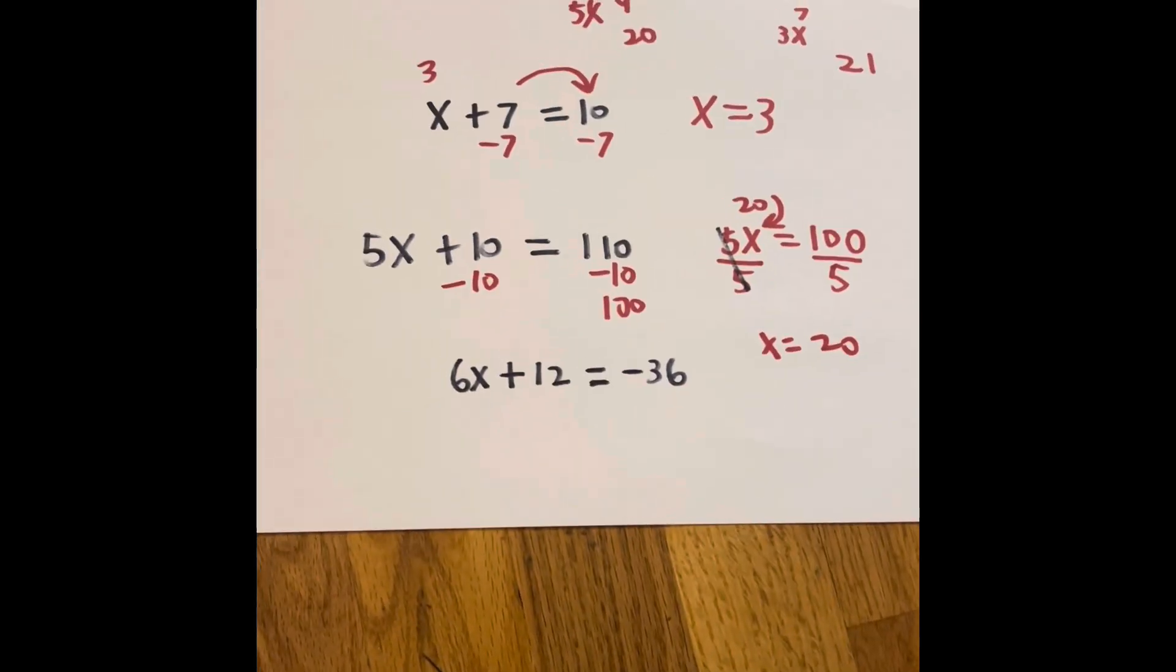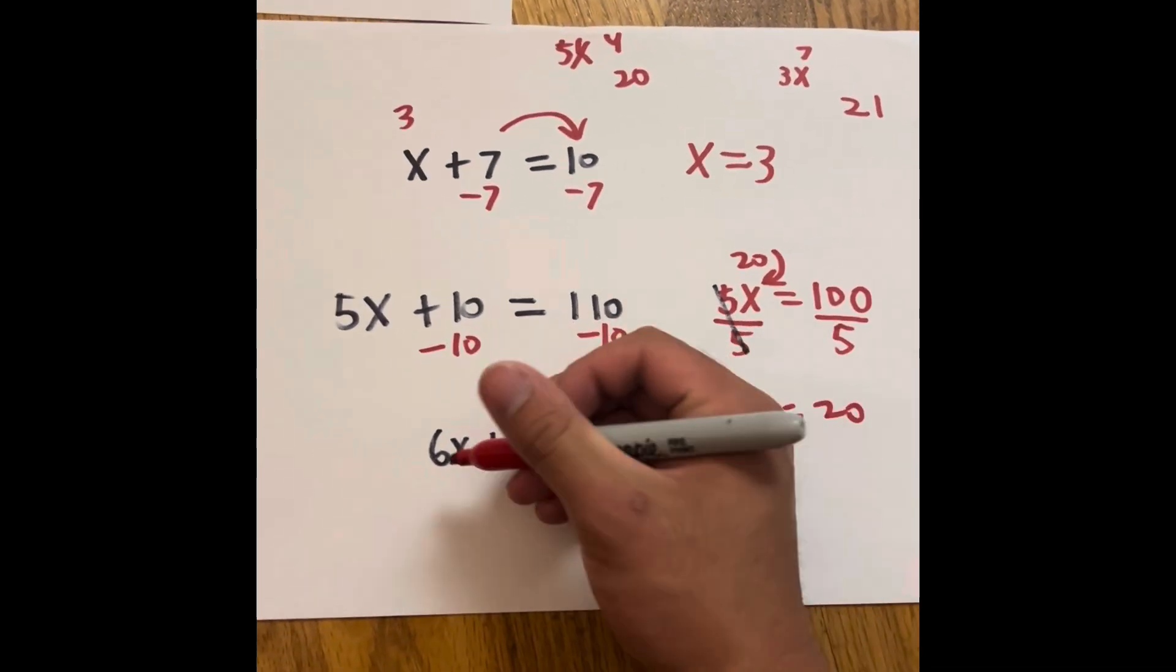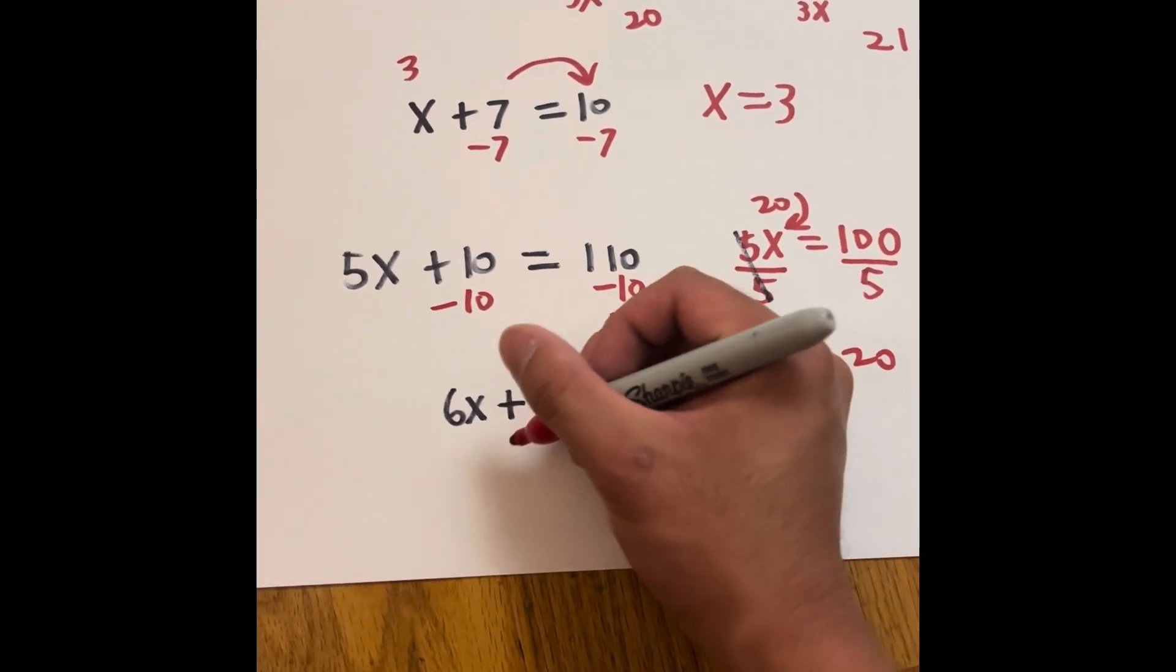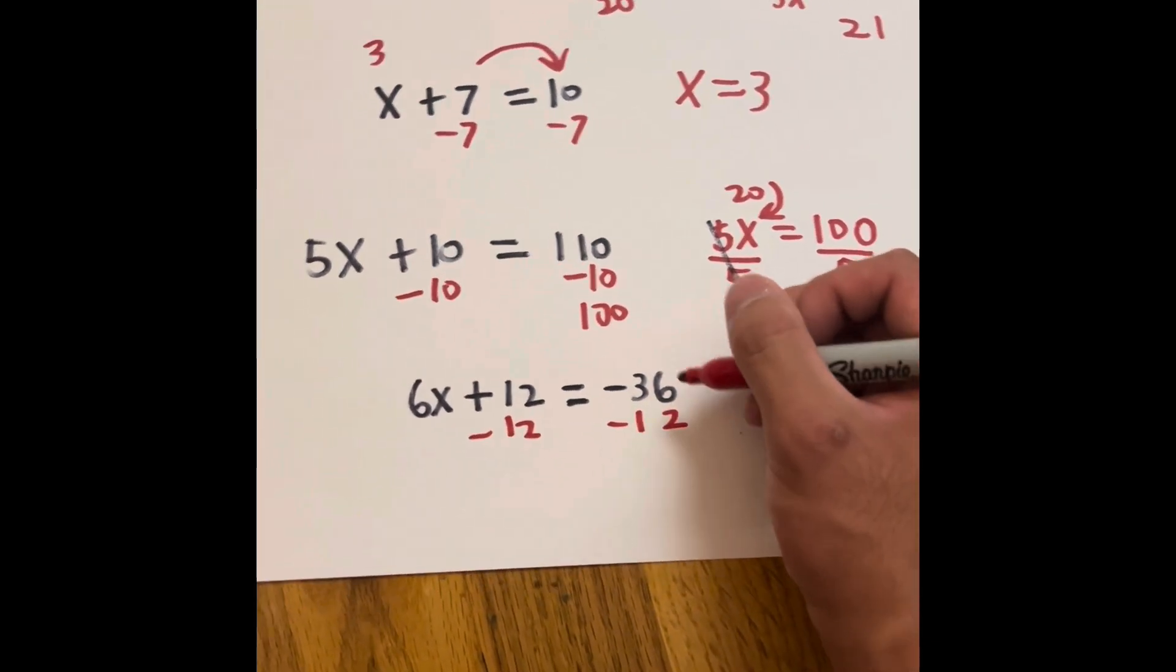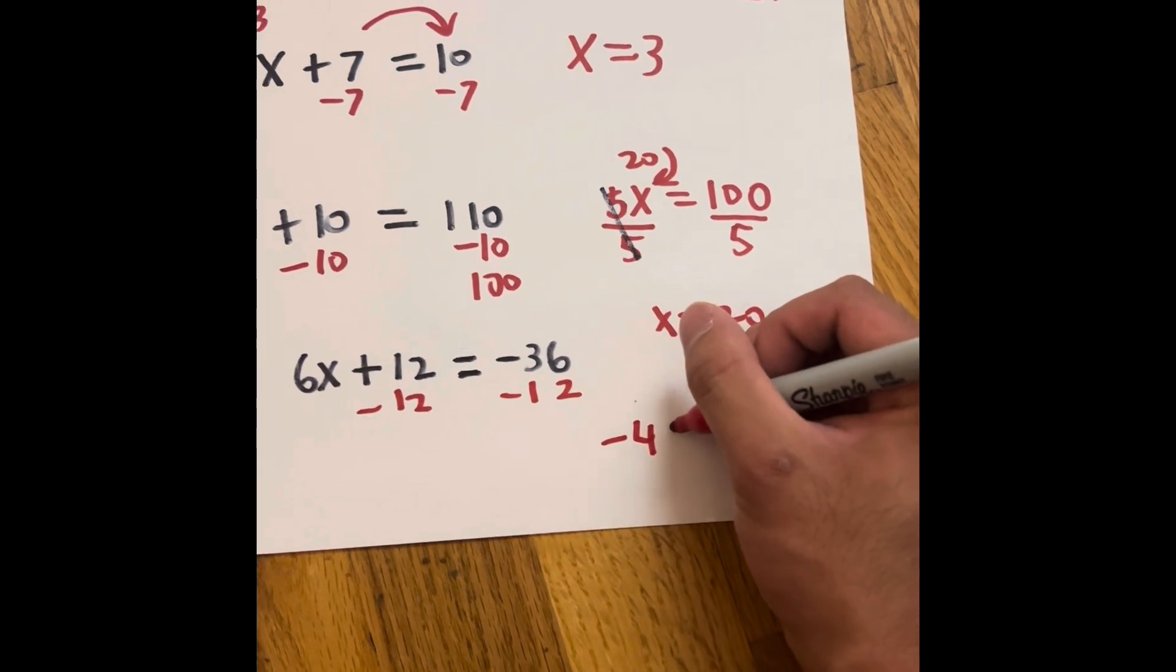Let's try one more problem: 6x plus 12 equals negative 36. We can subtract by 12 and subtract by 12, and we're going to get negative 48.